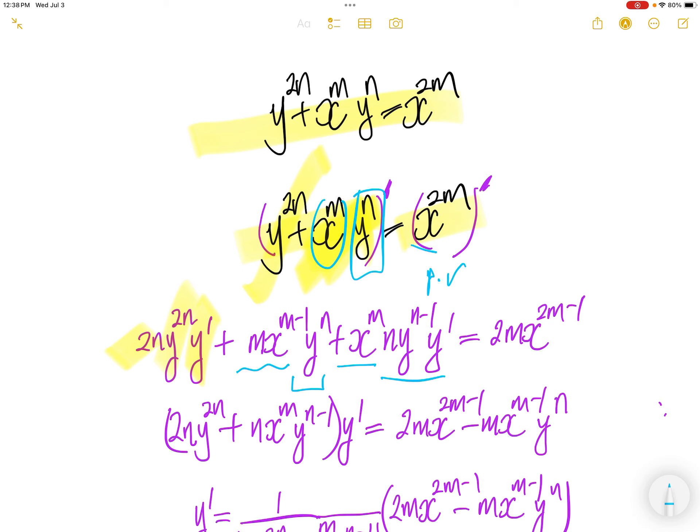We are applying the product rule. The derivative of this is 2m comes down, x to the power of 2n, minus 1.